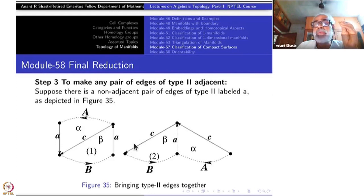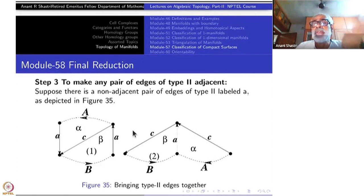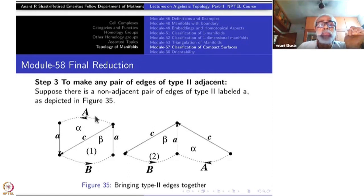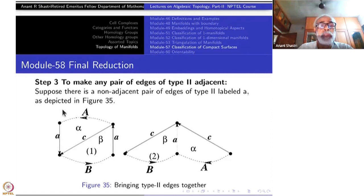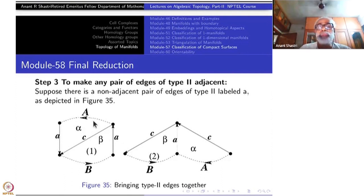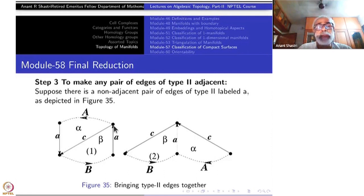So we assume there is a pair of type 2 that is not adjacent — if it is adjacent there is nothing to do. If it's not adjacent, there will be an edge 'a' and then some sequence, and the edge 'a' occurs again — 'a' followed by 'a' — with a gap in between. If the gap is empty then 'a' and this 'a' will be adjacent. So we must assume the gaps are non-empty.